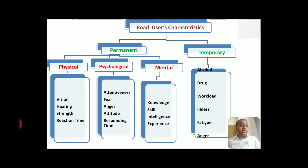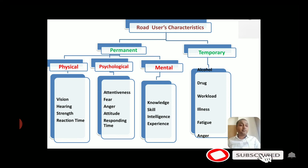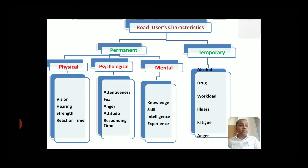That is why, while issuing a driving license, the RTO authority checks the person's vision capability, hearing capability, and reaction time capability. They ask you to read things at a long distance, and they present situations to check your reaction — how you will respond. All of this is done to check your physical capability.